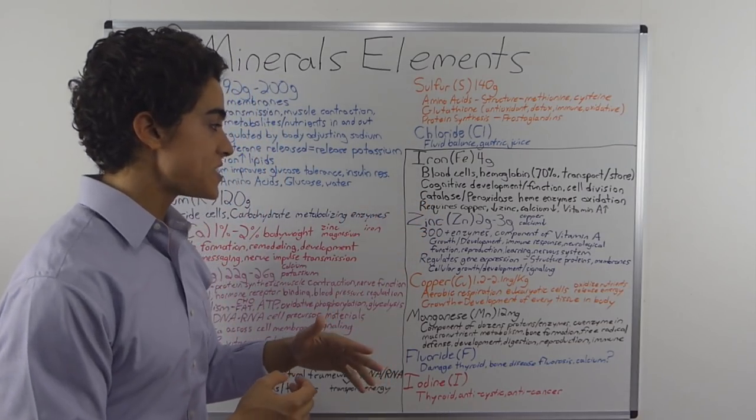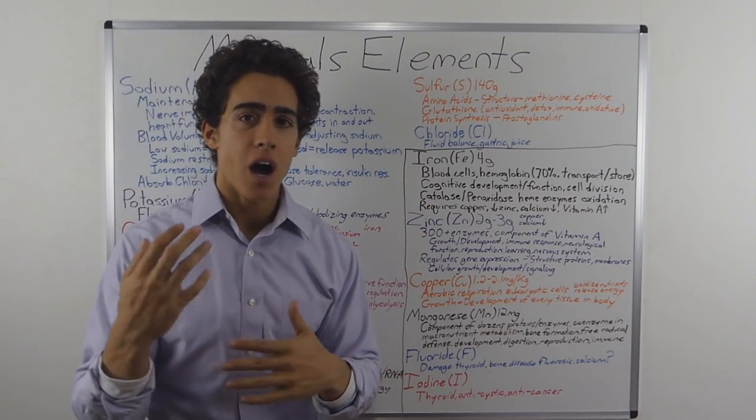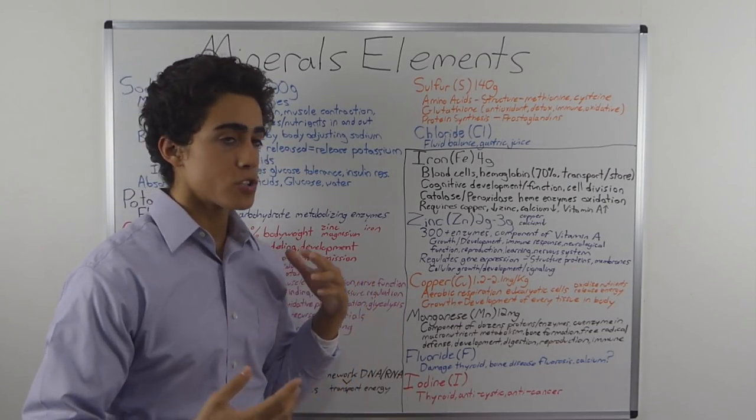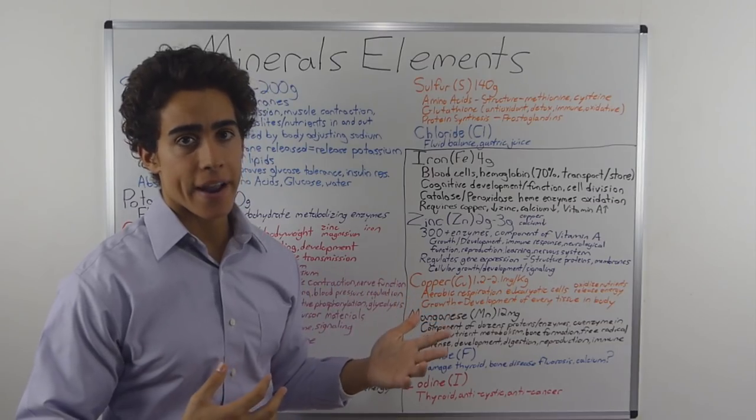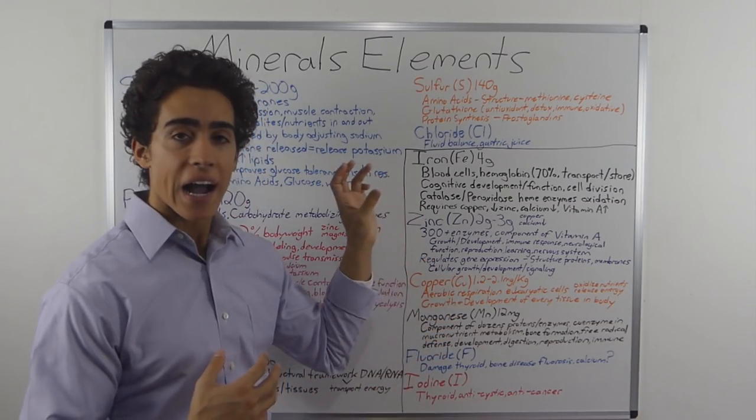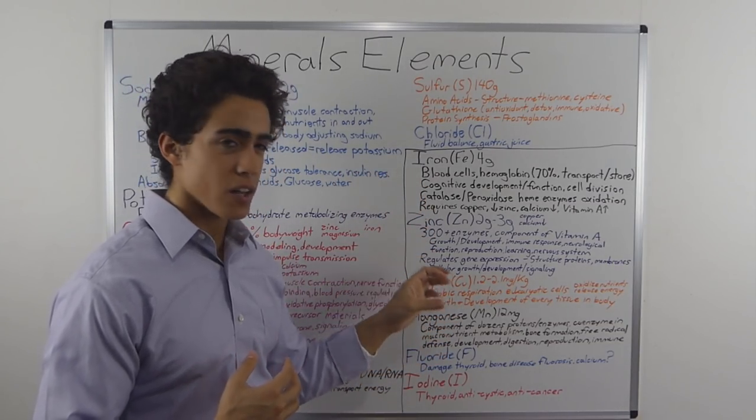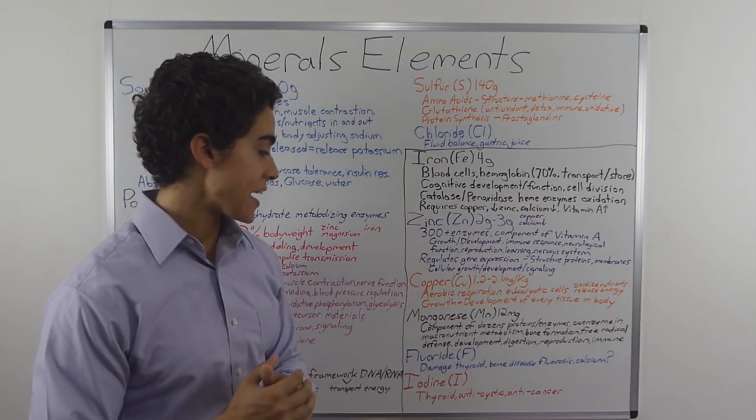Zinc to copper ratio is incredibly important. I might do a whole video on this, but if you're someone who's consuming a lot of liver, you might not be getting enough zinc to counteract that. So you need to be consuming high zinc foods if you're consuming a lot of liver, which is very high in copper.